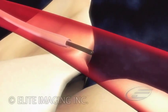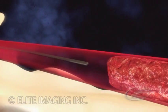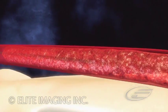Placement of a long introducer sheath provides percutaneous arterial access and is followed by placement of the guide wire through the clot.